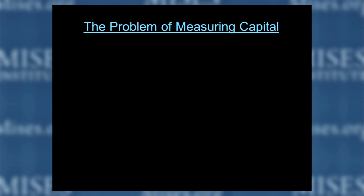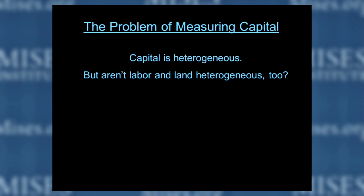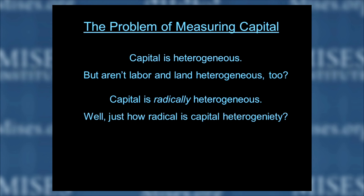There's a problem in measuring capital, and it's unique to capital. You start out easy: capital is heterogeneous — well, who would disagree with that? But you might come back saying so is labor, and so is land. So why is capital being heterogeneous such a big deal? We go to the next step: capital is radically heterogeneous — that sounds like something Ludwig Lachman would write. And further: capital is dimensionally heterogeneous. We just don't have the dimensions we'd like to give a meaningful measure of capital.